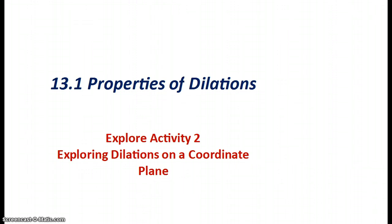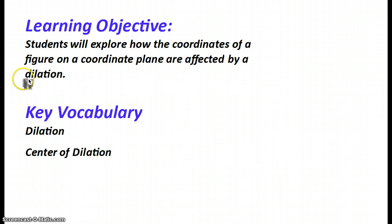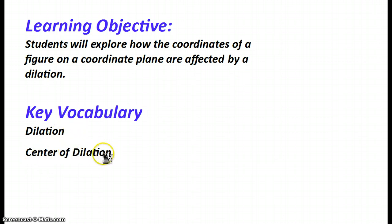We've already looked at the ratio perspective of what dilation does. Now let's take a look at the coordinate plane and how we would work through with dilations. Remember that a dilation will affect the size but not the actual shape or the orientation — it's really just an enlargement or reduction. The center of dilation is that particular point that runs to the different vertices.